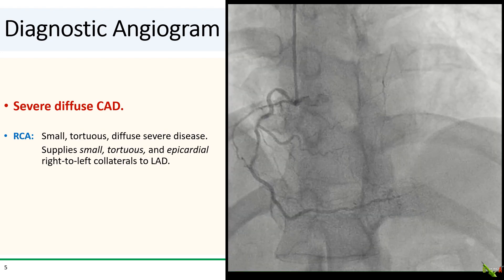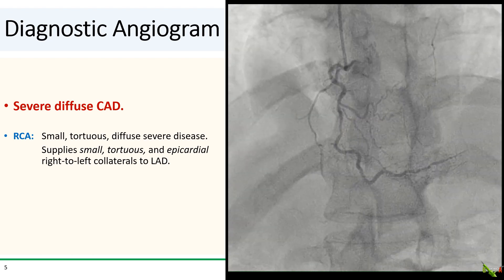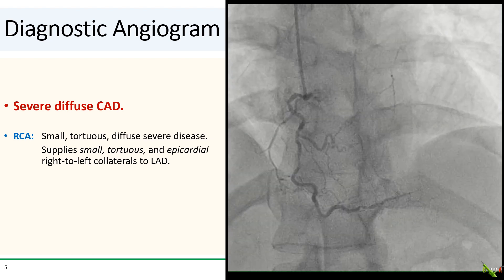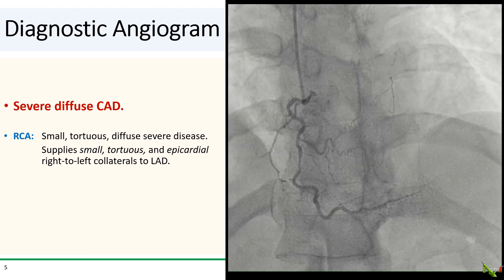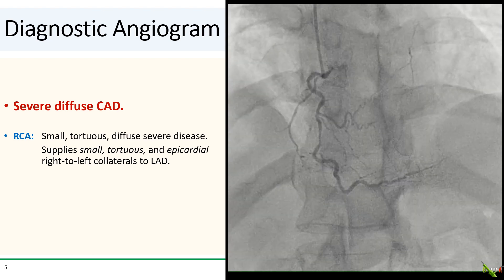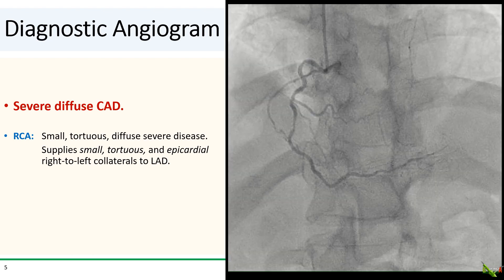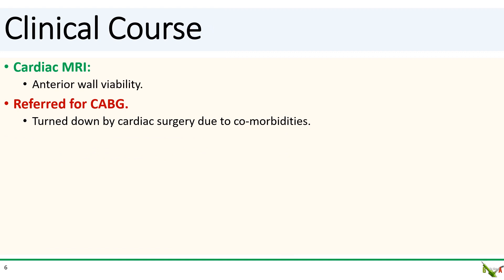The RCA is small and tortuous with severe diffuse disease. There are right-to-left collaterals to the LAD, but they are small, tortuous, and epicardial — not particularly attractive for wiring. We got a cardiac MRI which showed anterior wall viability and referred the patient for CABG. However, the patient was eventually turned down by the cardiac surgeons due to his multiple comorbidities.